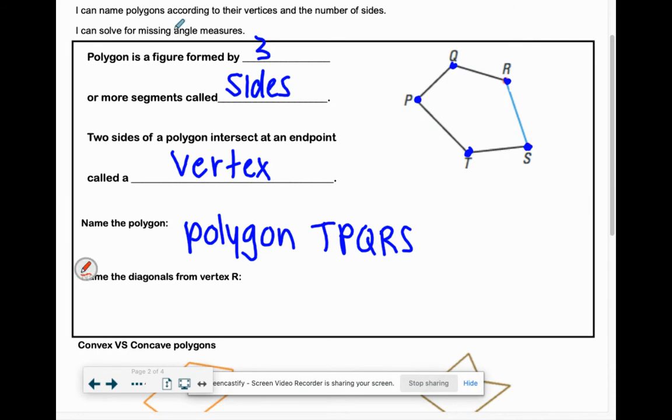And then the last part of just kind of learning about a polygon is name the diagonals from vertex R. Do you have an idea what your diagonal would be? Yes that's perfect, R P would be one and R T. The reason why like R S doesn't work is because that's a side, it's not going through our shape.